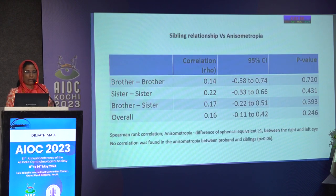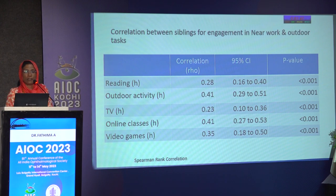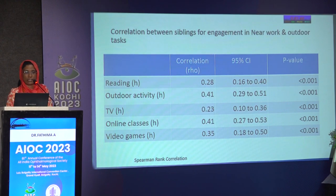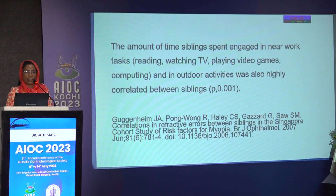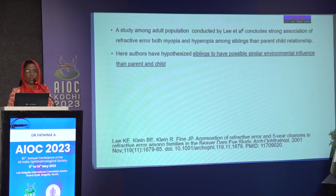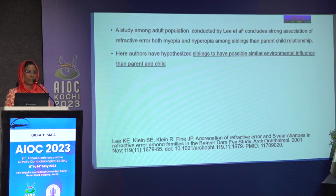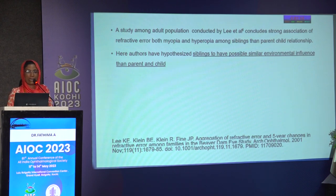For anisometropia and sibling correlation, there was minimal positive correlation that was not statistically significant. Regarding engagement in near and outdoor activities, there was highly statistically significant correlation among probands and siblings, with similar results observed by Gagan Game et al. showing the amount of time spent by proband and sibling were almost the same. Lee et al. concluded that the strong association of refractive error among siblings was more than the parent-child relationship, hypothesizing similar environmental influence between siblings.